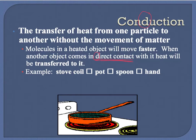The reason is the heat starts with the stove coil when you turn on the power. The stove coil transfers the heat to the pot, which then transfers the heat to the spoon, and the spoon goes directly to your hand. It's kind of like a chain reaction — all because things are touching and the heat is able to travel because of that contact.